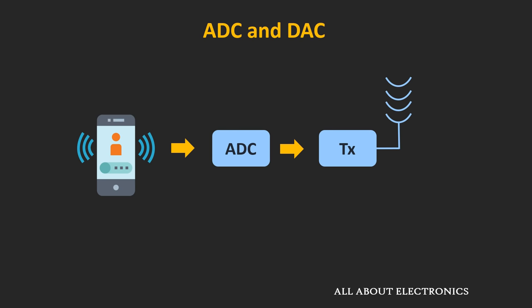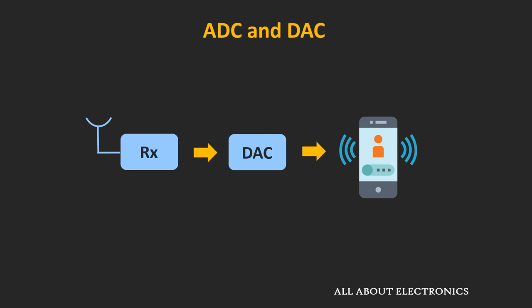Similarly, while talking on the phone, the microphone converts our voice into an electrical signal. Using the ADC, this signal is digitized and transmitted in the form of radio waves. At the receiver side, using the DAC, the received digital data is converted into the analog signal, and through the speaker we are able to hear the voice of the other person. So in short, in our day-to-day life, by some or other way, we are using ADC and DAC.